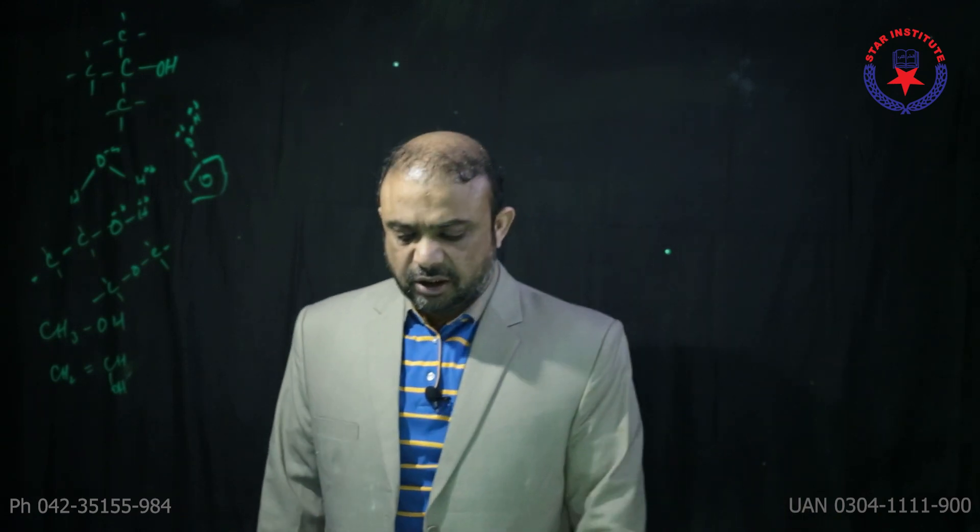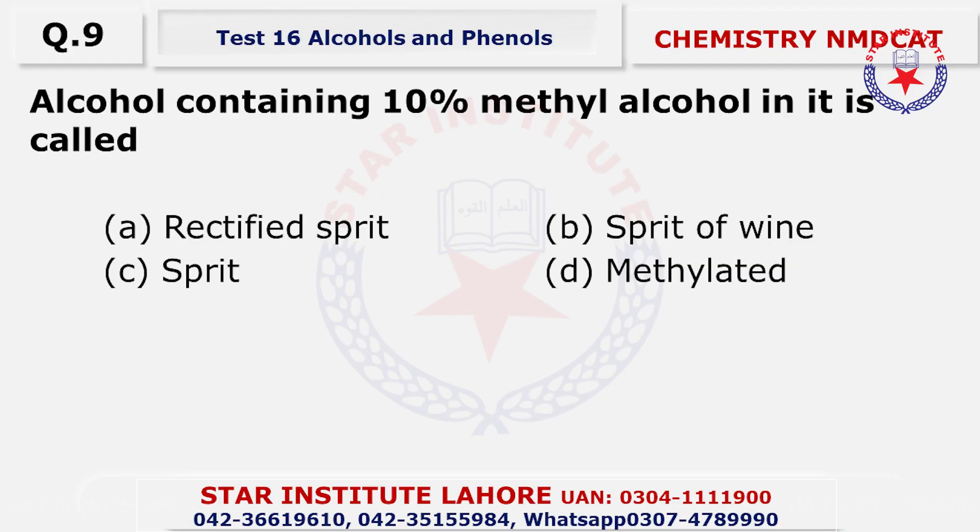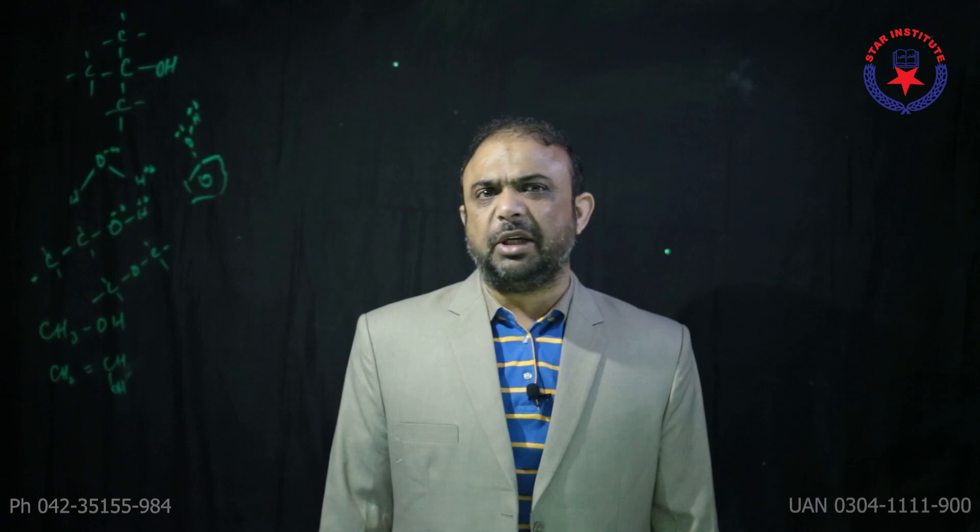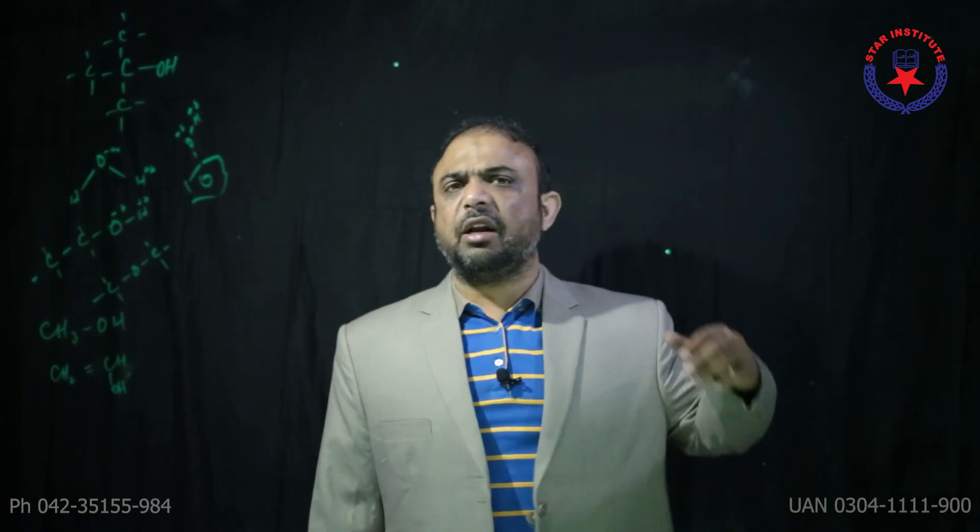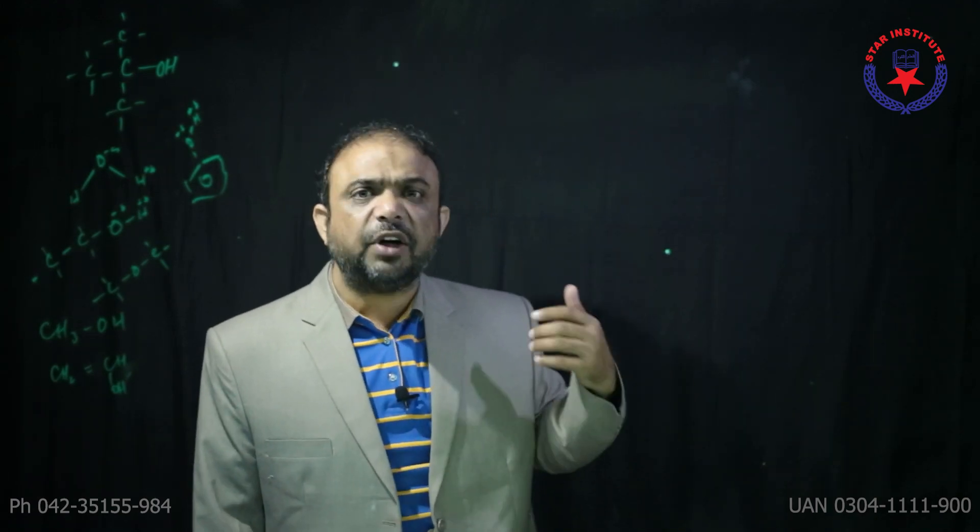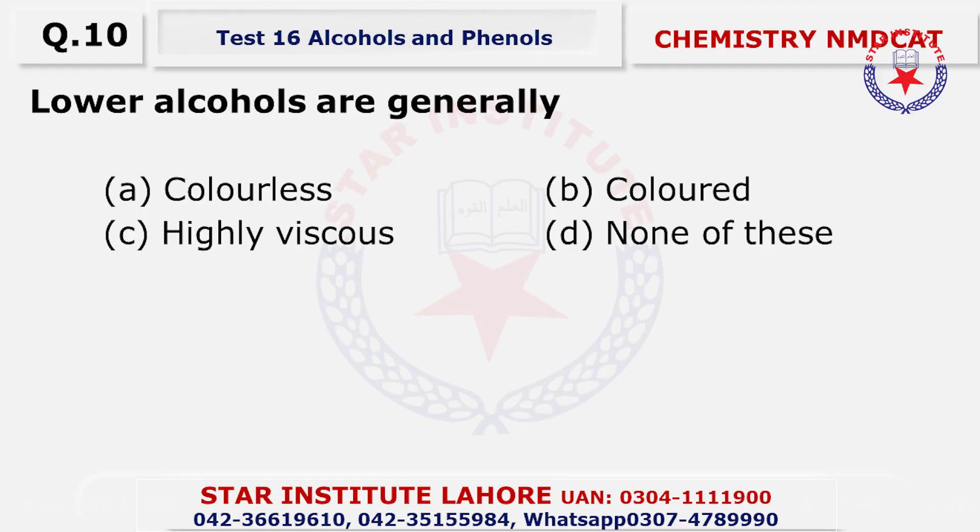Question eight: 95% alcohol is called rectified spirit. Question nine: alcohol containing 10% methyl alcohol is called methylated spirit. Methyl alcohol is added to make it unfit for drinking purposes. Question ten: lower alcohols are generally less liquid.